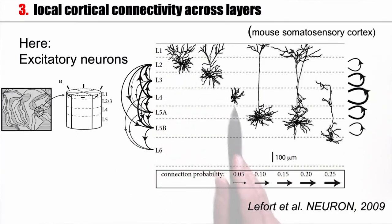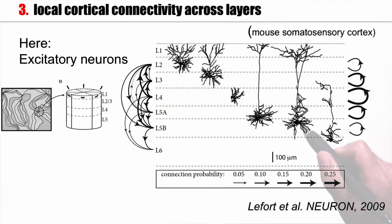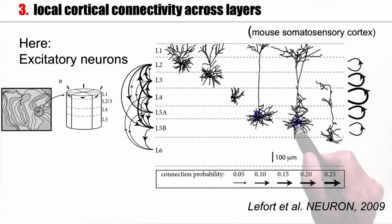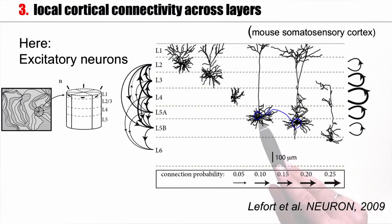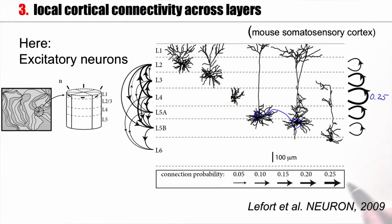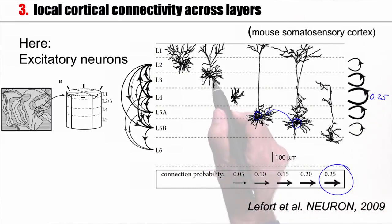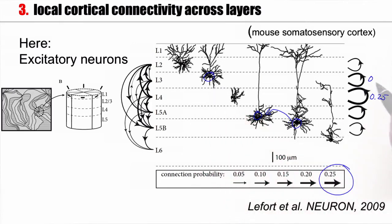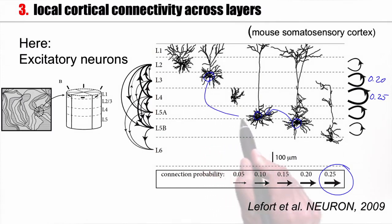In layer 3, layer 4, layer 5, I have different cell types. A cell in layer 5 will have a certain probability to make a connection to another cell in layer 5. So this excitatory pyramidal cell in layer 5 makes a connection to another layer 5 cell. For example, the connection probability from a cell in layer 4 to layer 4 is 25% — the thick arrows here indicate a 25% connection probability. A neuron in layer 3 has a connection probability onto itself in the range of maybe 20%, and the probability that a neuron in layer 3 makes a connection to a neuron in layer 5 is also around 20%.